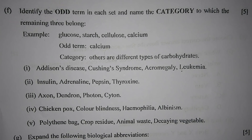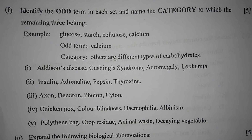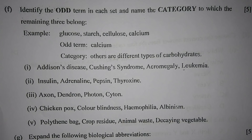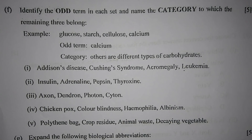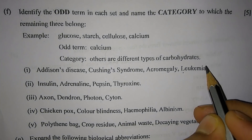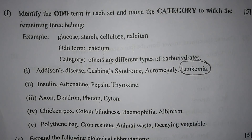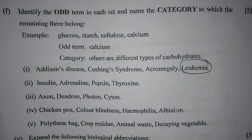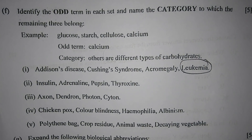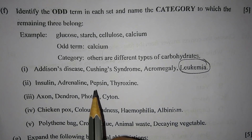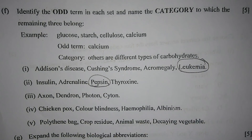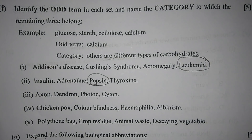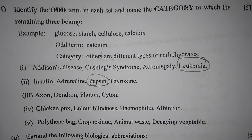Question 1f: Identify the odd term in each set and name the categories to which the remaining three belong. Number 1 — Addison's disease, Cushing's syndrome, acromegaly, or leukemia. The odd one out is leukemia; the others are hormonal disorders. Number 2 — insulin, adrenalin, pepsin, thyroxin. The odd one out is pepsin; the others are hormones.